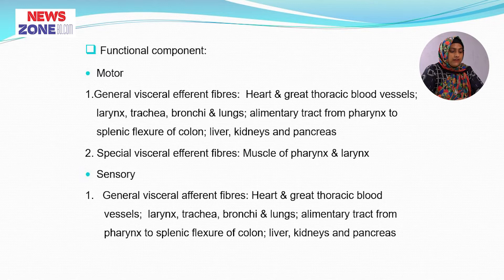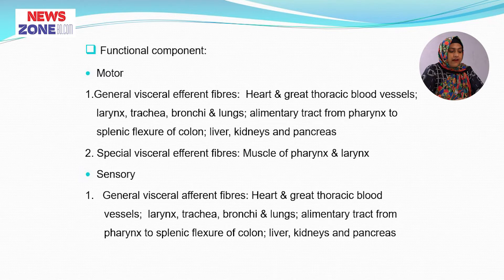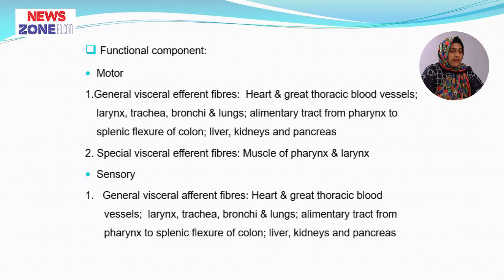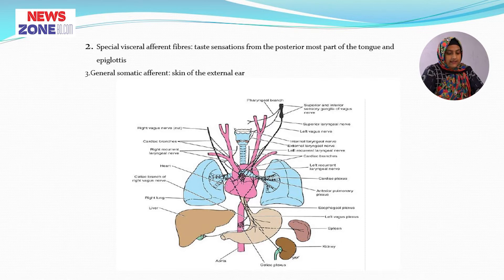The sensory component is the general visceral afferent fibre from the heart and great vessels, larynx, trachea, bronchi and the lungs, and the alimentary tract from the pharynx to the splenic flexure of the colon, liver, kidney and the pancreas. The special visceral afferent fibre carries taste sensation from the most posterior part of the tongue and the epiglottis, and general somatic afferent sensation from the skin of the external ear.